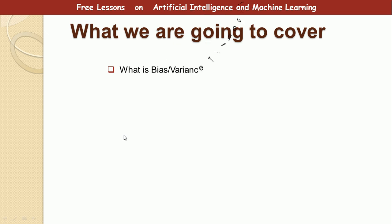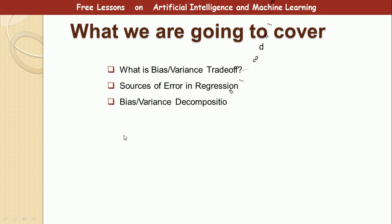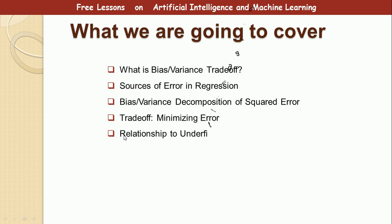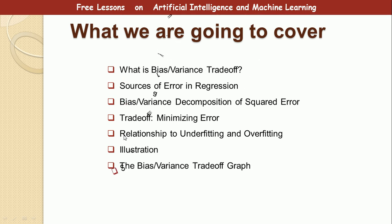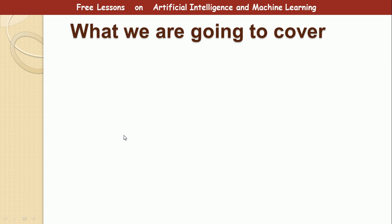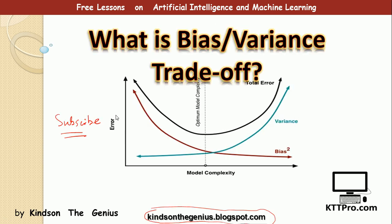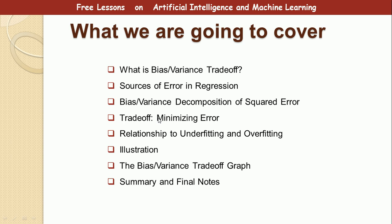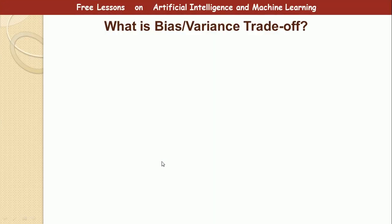Let's get started. Today we are going to cover: what is bias-variance trade-off, sources of error in regression, bias-variance decomposition of squared error, the trade-off, minimizing the error, the relationship to underfitting and overfitting, and we will illustrate the bias-variance trade-off graph and then summarize with a few final notes.